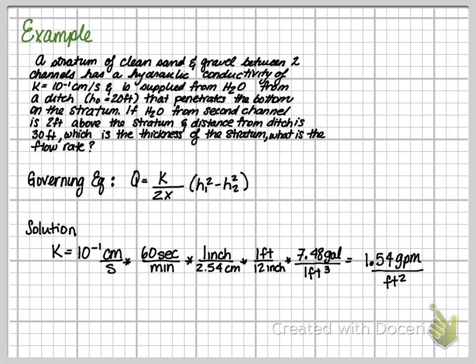We know that 7.48 gallons equals 1 cubic foot. So we're multiplying that equation by 1 so that we can get the data to be in gallons per minute per feet squared, which is 1.54.